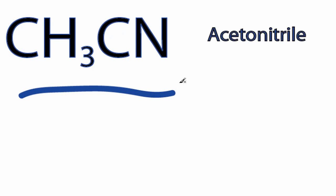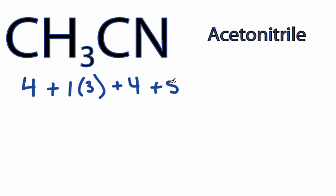Let's do the CH3CN Lewis structure. For CH3CN, we have four valence electrons for the carbon, plus one for the hydrogen, we have three hydrogens, plus four for the other carbon, and then five for that nitrogen, giving us a total of 16 valence electrons.